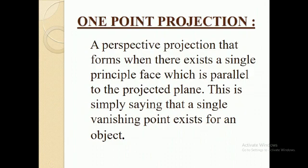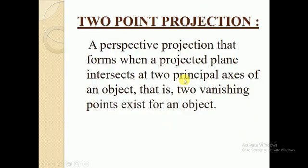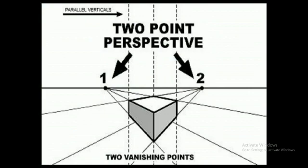In one-point projection, a perspective projection forms when there exists a single principal face which is parallel to the projection plane — simply meaning a single vanishing point exists for the object. In two-point projection, there exist two vanishing points for the object, meaning the projection plane intersects two principal axes of the object, as shown in the diagram.